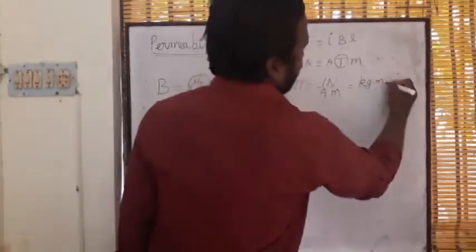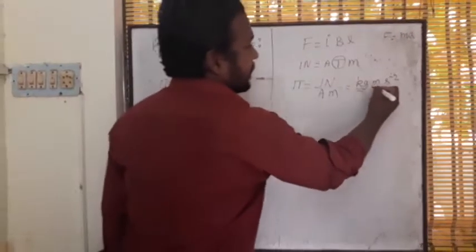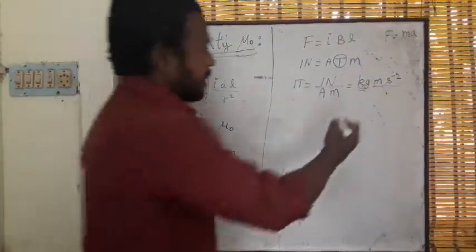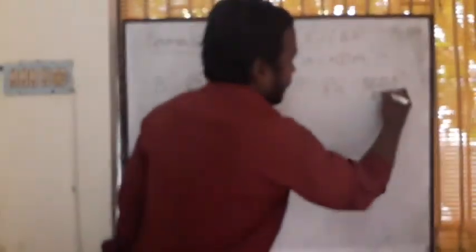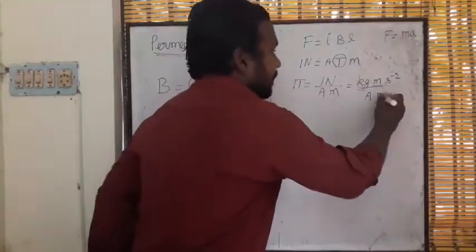KG meter second minus 2, force equals mass into acceleration. Mass is KG, acceleration is meter by second squared by ampere into meter. Tesla we got, so meter meter will cancel.